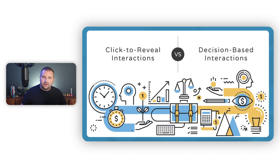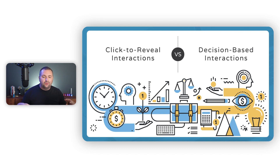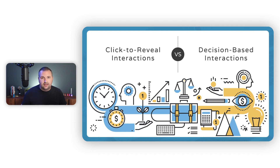That leads me to talking about designing branching scenarios. In the world of e-learning, there are usually two different types of interactivity you can incorporate into your courses: click-to-reveal interactions, and decision-based or performance-based interactions. While there's a time and place for click-to-reveal interactions, what we really want to be doing is having our learners put into practice the skills we're teaching them. One of the most powerful ways to do that is through branching scenarios and interactivity that allows learners to apply critical thinking skills.